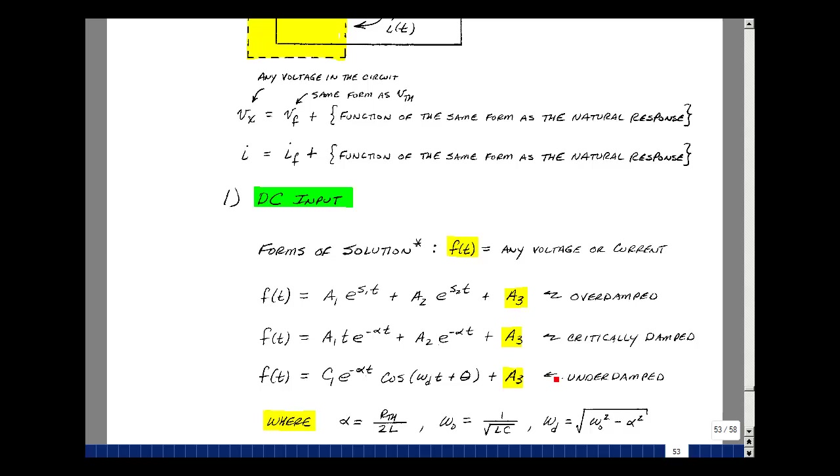For the critically damped case, we had S1 equal to S2, and this is a different form of the solution. And lastly, for the underdamped case, we had that alpha was less than omega-0. We had the same form of the solution, we're just going to add a DC result.